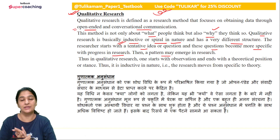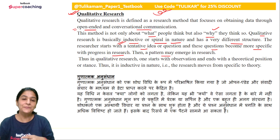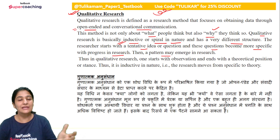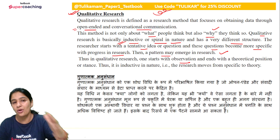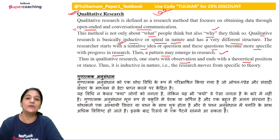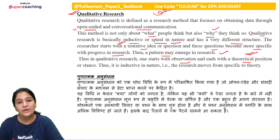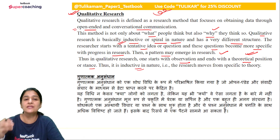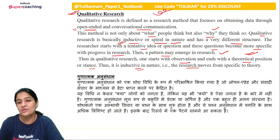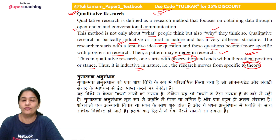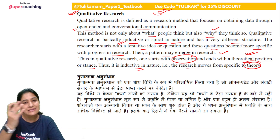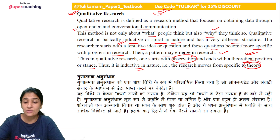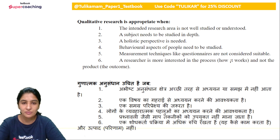We move from an abstract idea toward something concrete — as we progress, many modifications occur, which is why qualitative research is called spiral in nature. A pattern emerges over time; you cannot decide in advance exactly how the qualitative research will go. It takes shape as it progresses, and a specific pattern becomes ready. Thus in qualitative research, one starts with observation and derives a theory from it — always ending with a theoretical position or stance. That is why qualitative research is called inductive in nature.